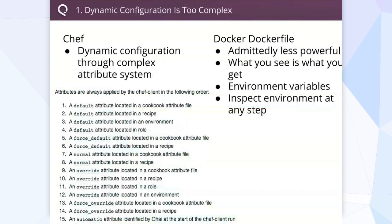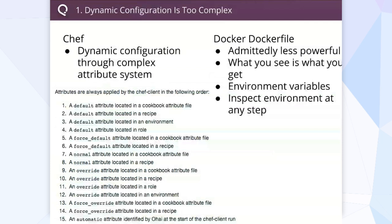You've got default attributes, force default attributes, overrides, force overrides, and automatic attributes — multiply that by cookbooks, recipes, environments, and roles. It gives you utmost power, which you might need, but if you don't, it can cause headaches when debugging. For situations when you don't need that, Dockerfiles can be a lot simpler to work with. They're less powerful, but when you're looking at a Dockerfile, it's all there — very self-contained. You don't have to go look in a million different places to figure out where your configuration is coming from.